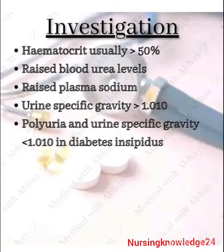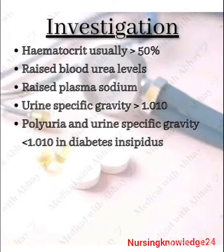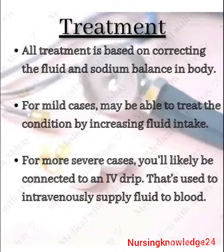In investigation, hematocrit is usually more than 50%, blood urea levels rise, and plasma sodium is increased. Urine specific gravity is greater than 1.001. In diabetes insipidus, polyuria occurs and urine specific gravity is less than 1.010.